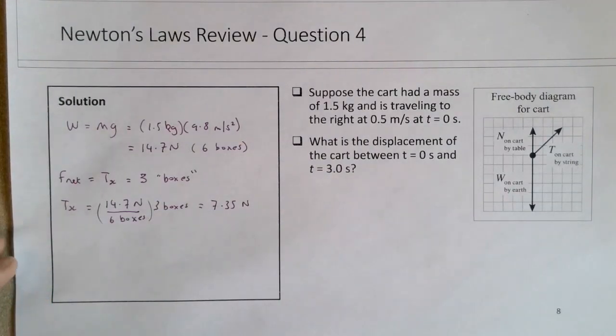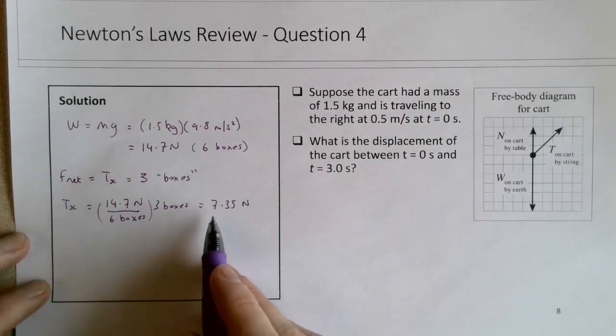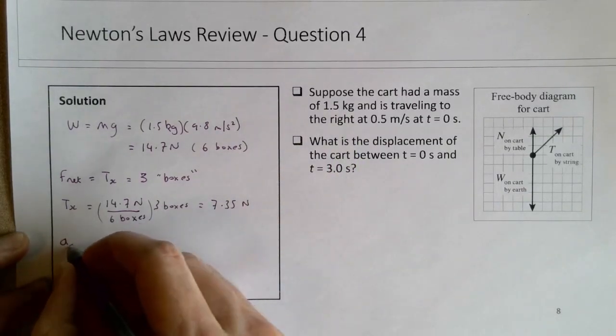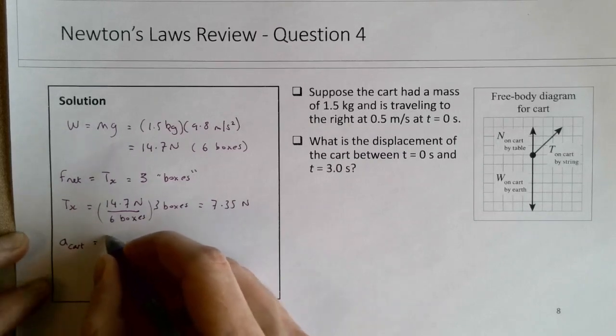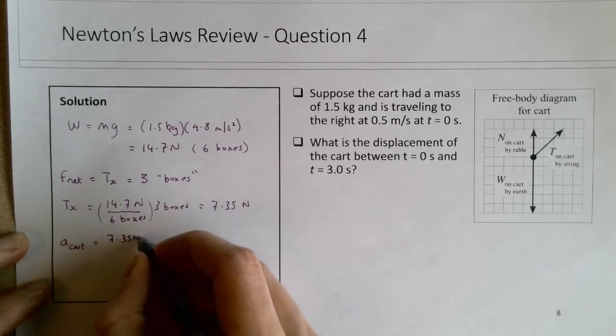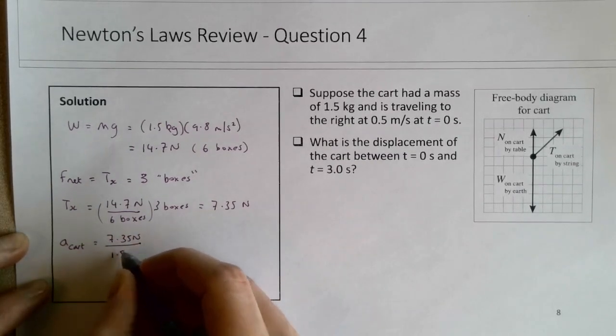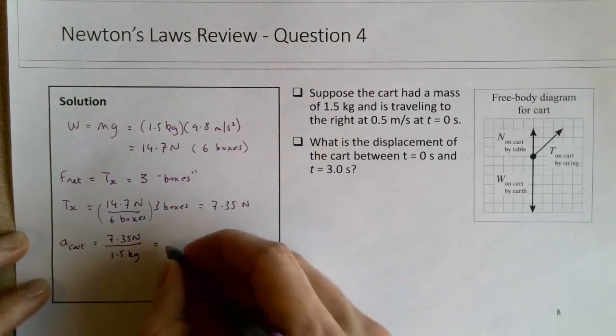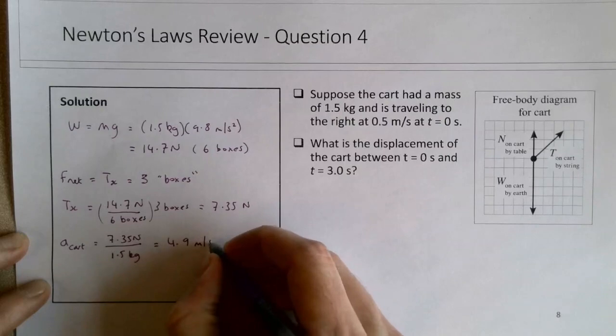So now we can find the acceleration of the cart, since we have the net force on the cart and we have its mass. So the acceleration of the cart will be the net force on the cart divided by its mass, which is 4.9 meters per second squared.